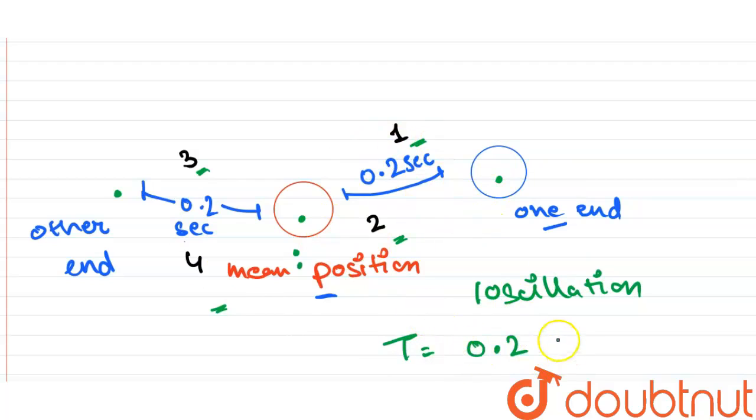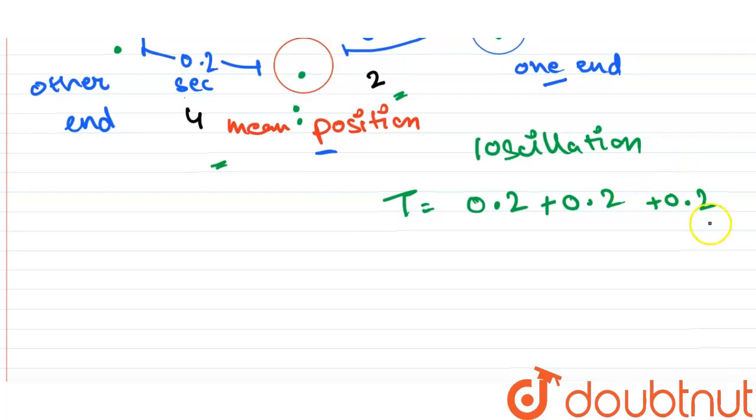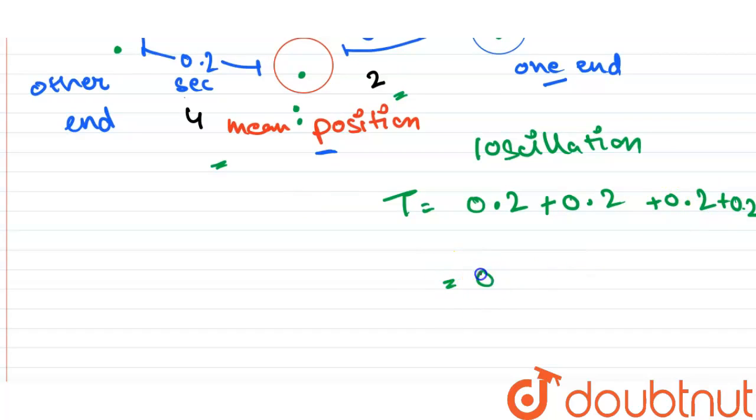That is 0.2 plus 0.2 for the second portion, plus 0.2 for the third portion, and 0.2 for the fourth portion. This gives us a total time period of 0.8 seconds.